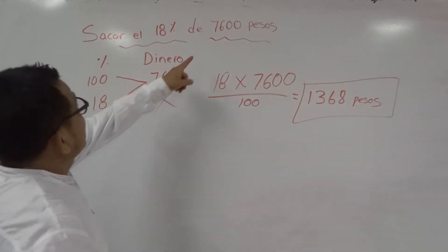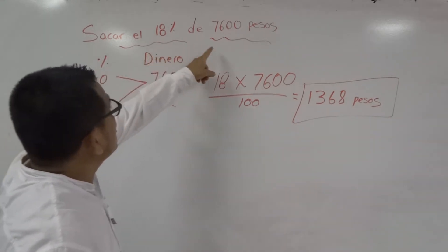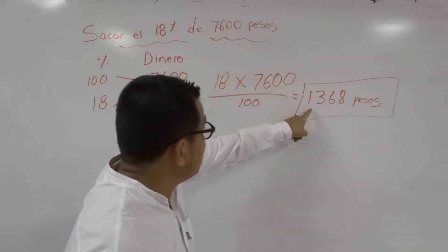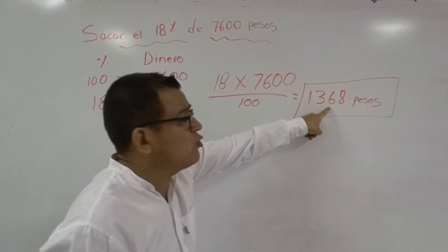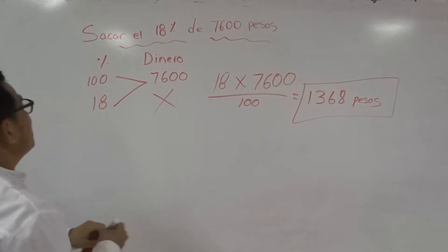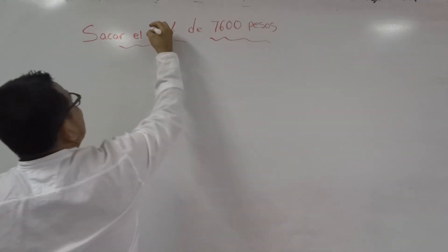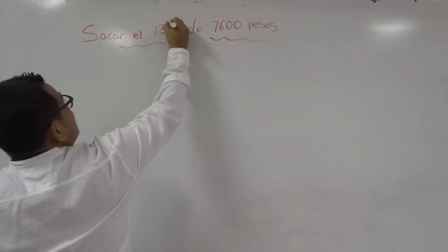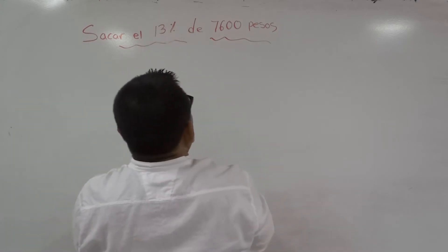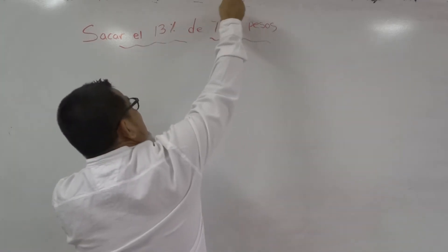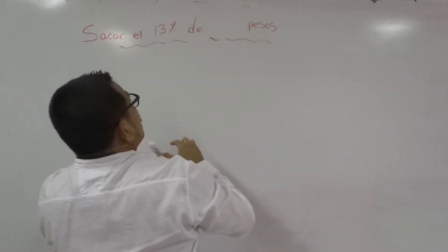El 18 por 7600 es 1368 pesos. Eso es todo. Hacemos otro ejemplo: el 13% de 900 pesos.